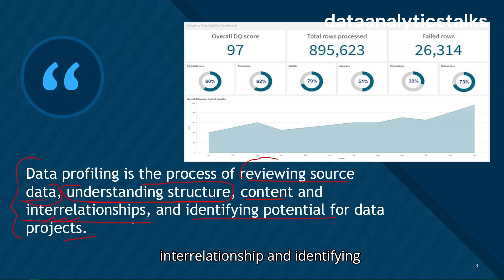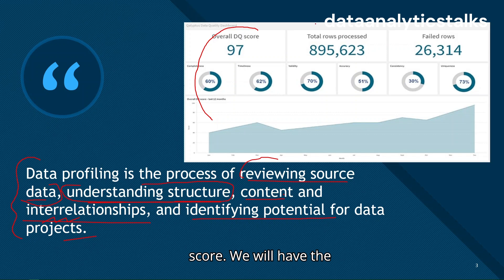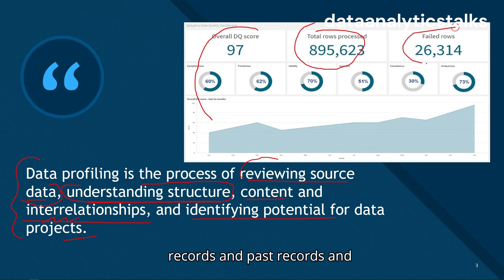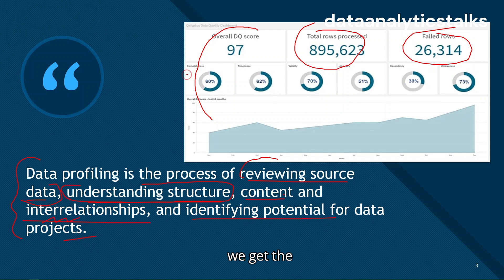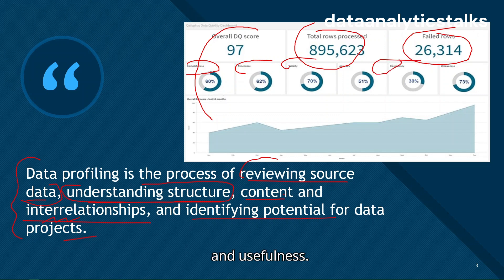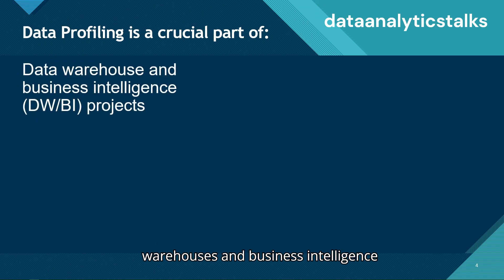After every data profiling run, we get a score — a number of processed records, failed records, and passed records. We get statistics about completeness, timeliness, validity, consistency, and usefulness.